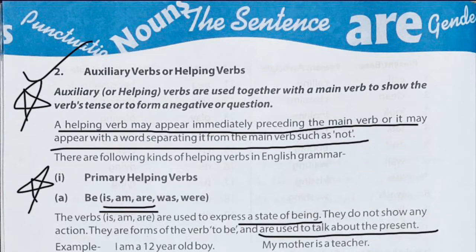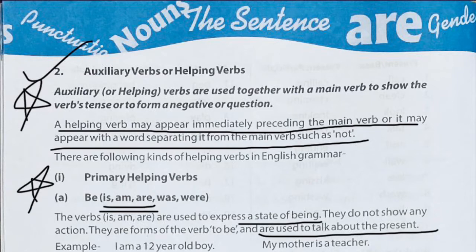A helping verb may appear immediately preceding, meaning before, the main verb — in most cases the helping verb comes before the main verb. In some cases it may appear with a word separating it from the main verb, such as 'not.' When 'not' is used, the helping verb gets separated from the main verb.